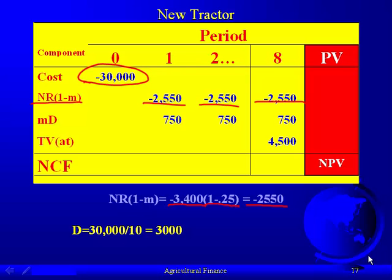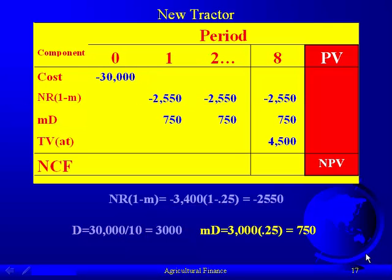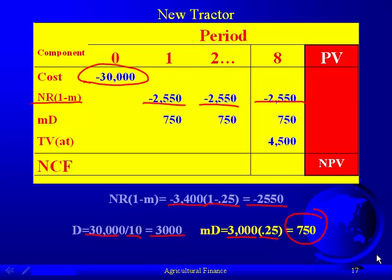For the tax savings from depreciation, we purchased this new tractor for $30,000. The depreciable life was 10 years, so we can claim $3,000 per year. We multiply that $3,000 depreciation by the tax rate to see that we can save $750 per year.